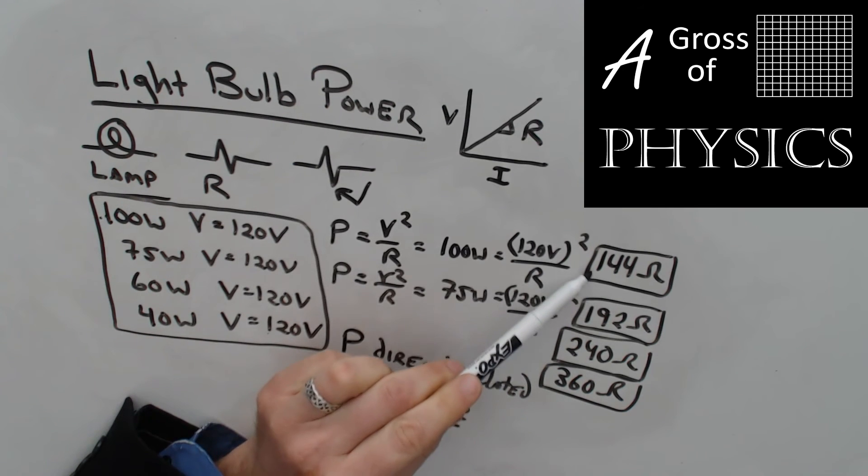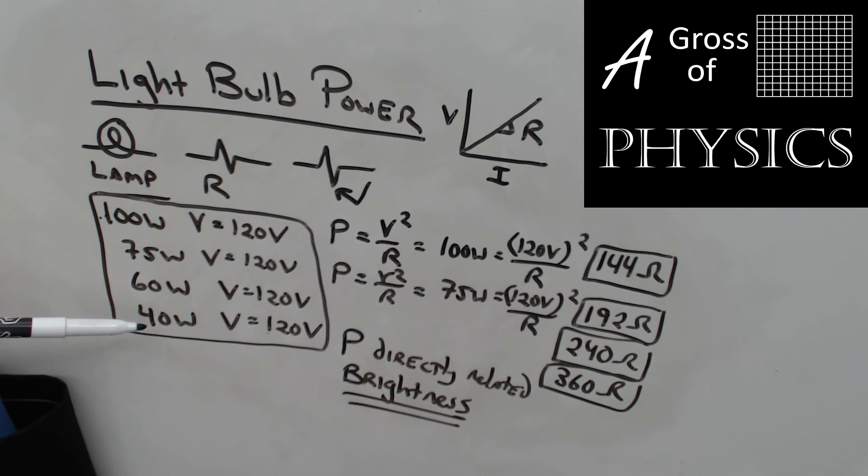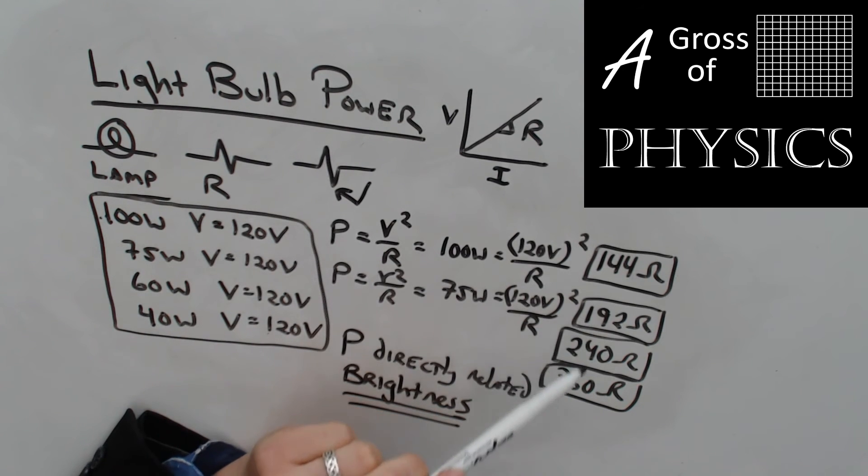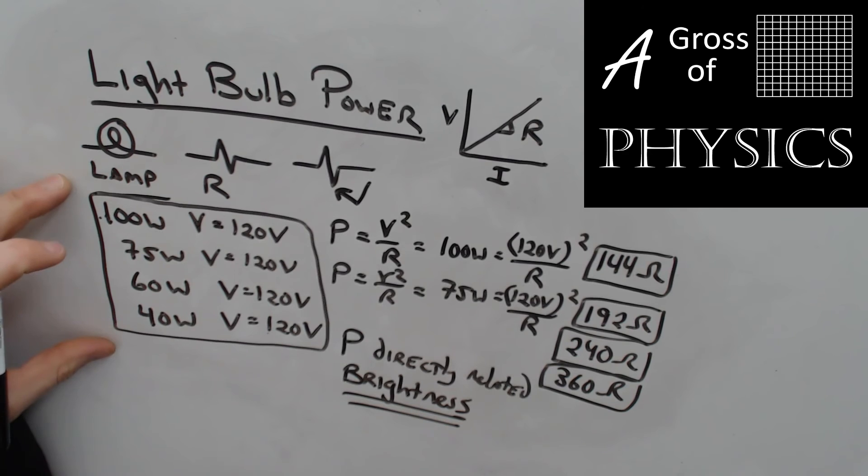On the other hand, the resistance values go up as we have lower power ratings. When we plug in a 40 watt bulb in a series circuit, we're going to use 360 ohms as our resistance. 60 watt bulb is going to be 240, 75 is going to be 192, and a 100 watt bulb we're going to use as 144 ohms. You're going to be expected to remember this as we move forward. Make sure you keep note of this chart in your notes.